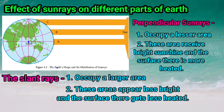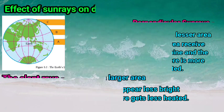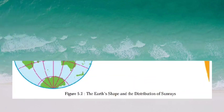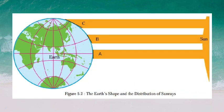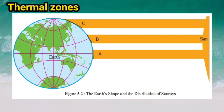Based on this unequal distribution of heat, the Earth is divided into three zones called thermal zones. Let's see the causal conditions behind this division of thermal zones, or temperature zones.